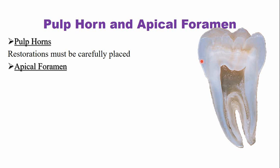The second important landmark is the apical foramen. The apical foramen is the opening of the pulp chamber at the apex of the tooth. From the apical foramen the nerves and the blood vessels they enter and leave the tooth. In the developing tooth this apical foramen is very large, whereas in a fully developed tooth the apical foramen is very small.